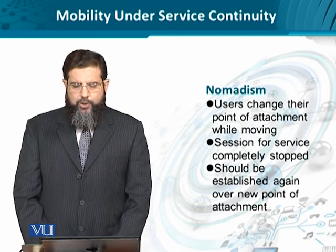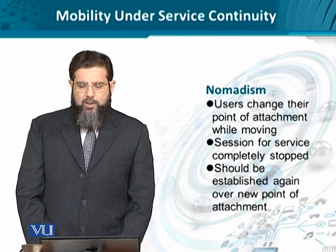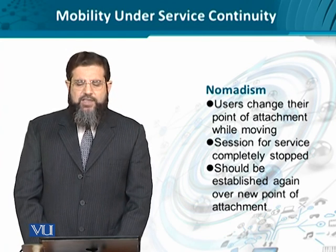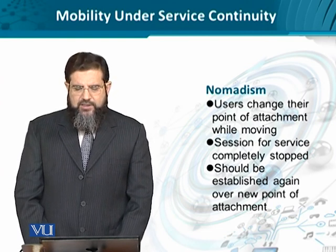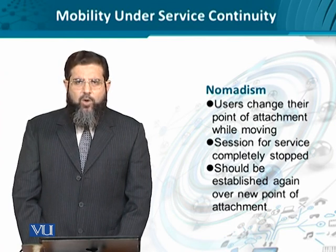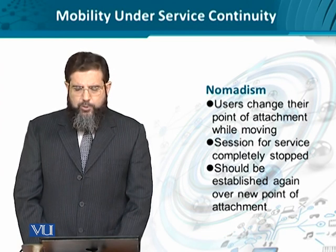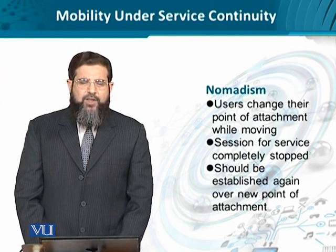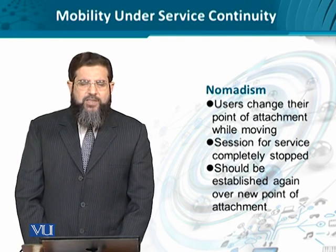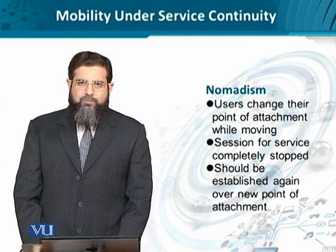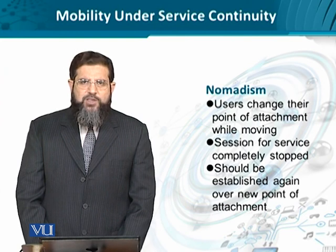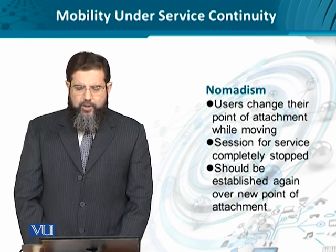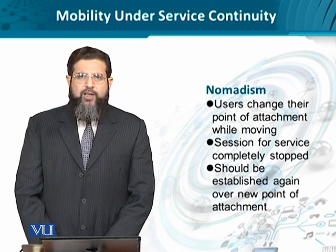An example of Service Discontinuity is being Nomadic. Nomadic users actually change their location or point of attachment while moving, such that whenever the mobile phone moves from one network to the other, the service comes to a complete stop. How the user experiences this depends on whether there is some management mechanism available at the application layer, like buffering or jitter mitigation. But since service discontinuity is allowed by the user, when the user moves to a newer network, connectivity has to be established again with the new network point of contact.